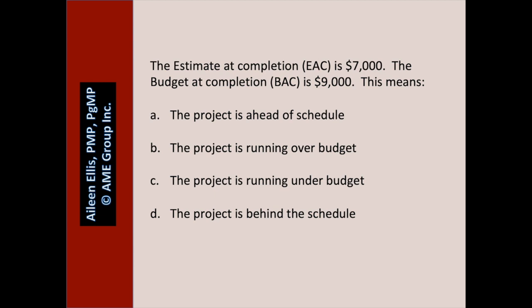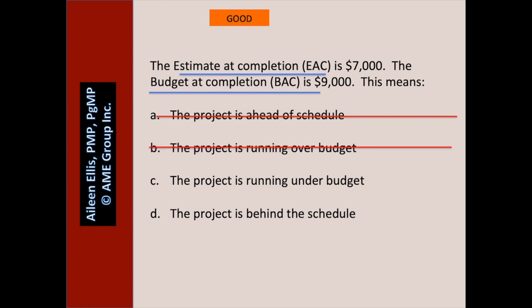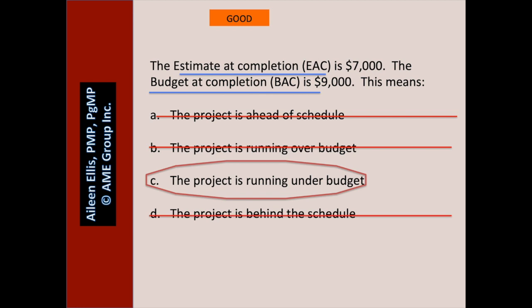The estimate at completion is $7,000. The budget at completion is $9,000. This means — before you get wrapped up in earned value, make it simple: we estimate the whole project is going to cost $7,000 and we have a budget of $9,000. Is that good or bad? That's really good — it means we expect to come in under budget. A: the project is ahead of schedule — we don't know. B: the project is running over budget — I doubt it. C: the project is running under budget — yes, that's why we expect to complete with $7,000 total even though we have a budget of $9,000. D: the project is behind schedule — we have no idea.